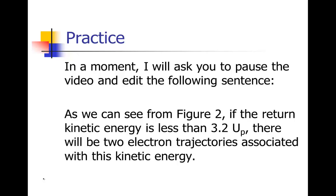One last example. It says: as we can see from figure two, if the return kinetic energy is less than 3.2 UP, there will be two electron trajectories associated with this kinetic energy. Go ahead and pause the video and edit that on your own, and then we'll talk about it afterwards.